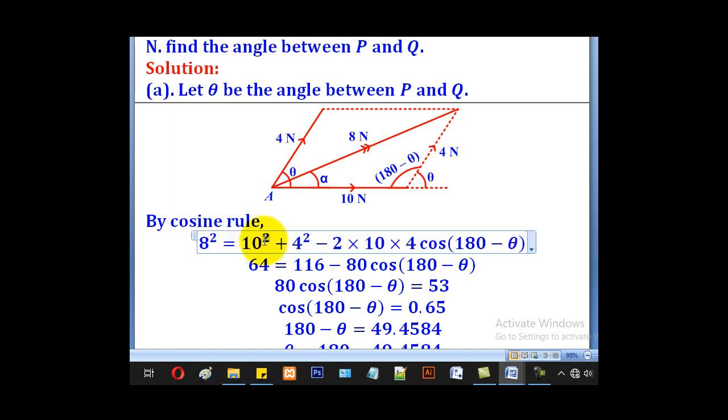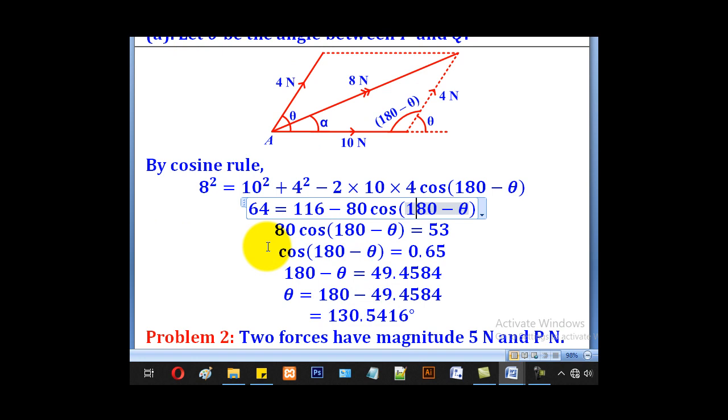Then from there we shall simplify. 8 squared is 64. 10 squared plus 4 squared is 116. 2 times 10 times 4 will be 80 then cos that. Then make cos theta the subject, we shall come up with this step.